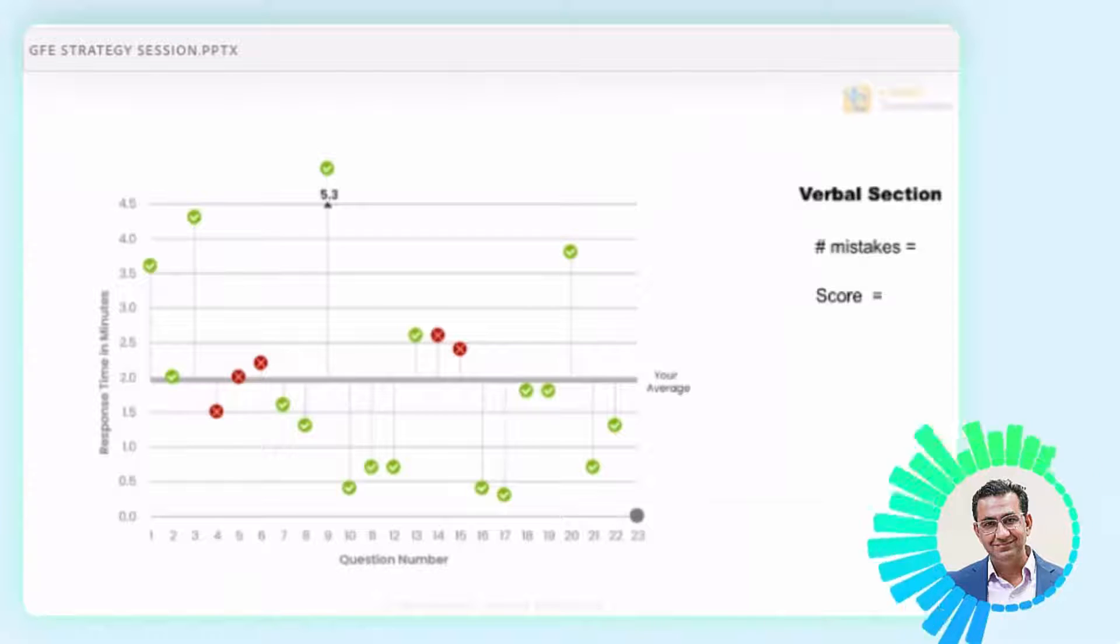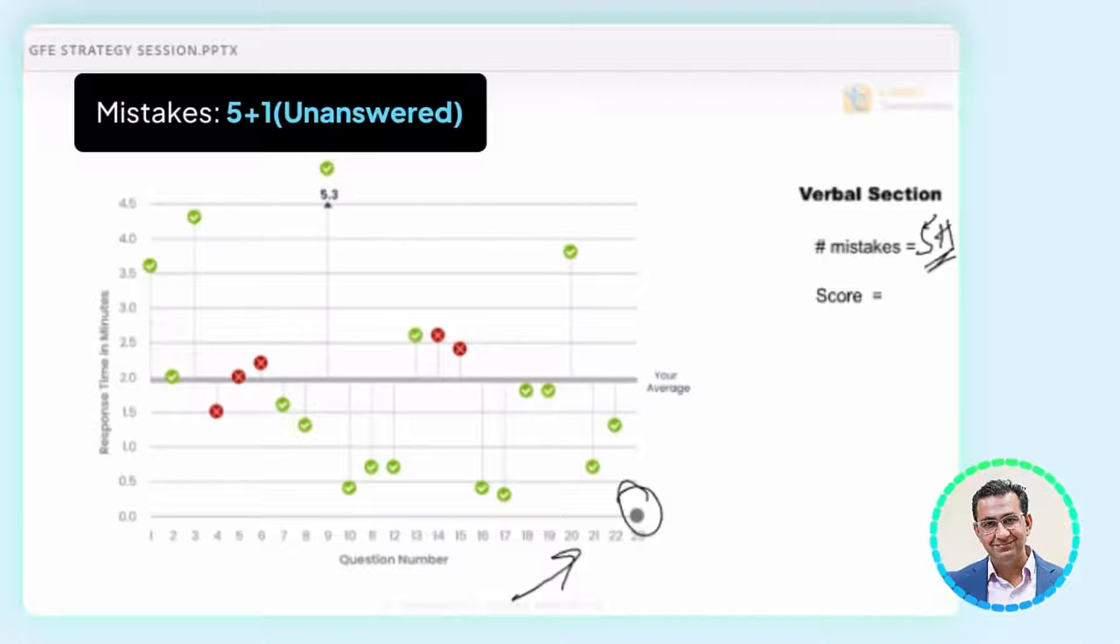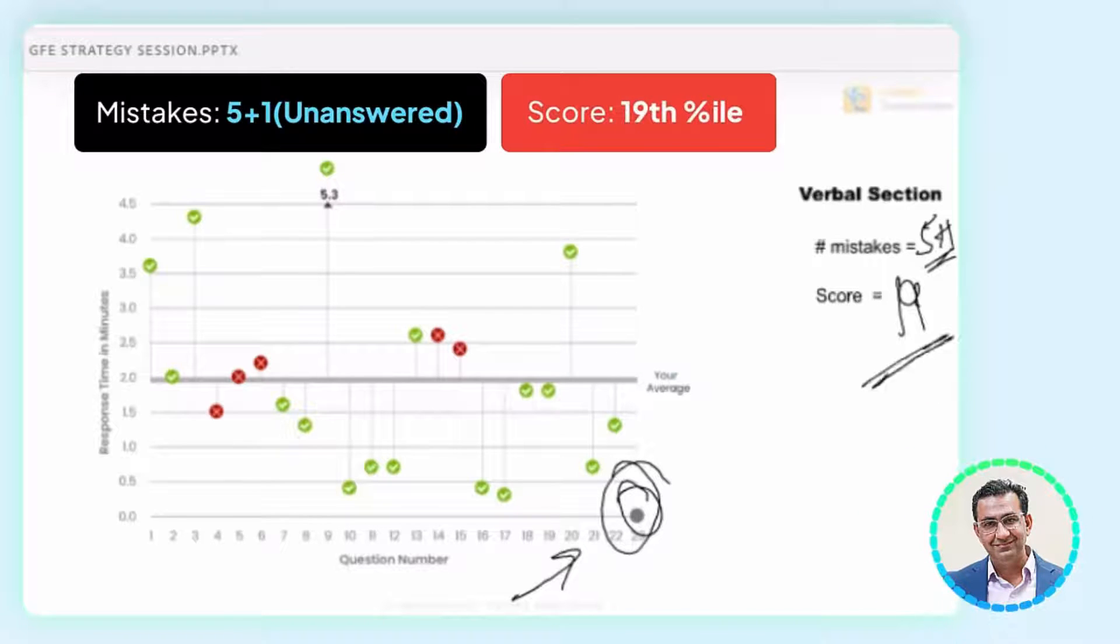There's another student who actually made five mistakes and left this one question unanswered. What do you think his percentile score is? I'm going to clear the poll so that you guys can put that in. Yeah. 80, 85, 75, and for the person who said, you know, how should I build my study plan? We're going to discuss that in about 15 minutes. Alright. 70s. Okay. This person made five plus one mistakes. This one question that he left unanswered and his percentile score was 19th. One nine. That may be very, very clear. Not 91, but one nine.